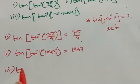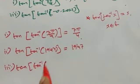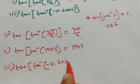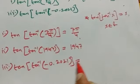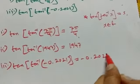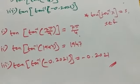Third one: tan inverse of tan inverse of minus 0.2021 equals minus 0.2021.